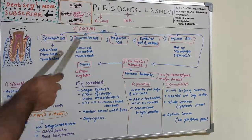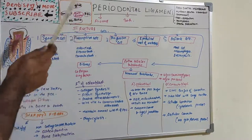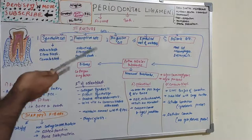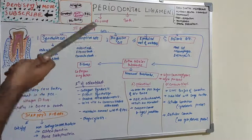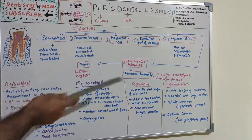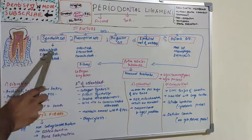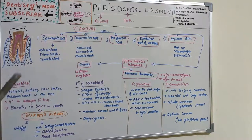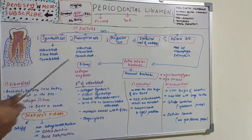Resorptive cells — the destructive cells — are osteoclast, fibroclast, and cementoclast. This is important: 'blast' means create, 'clast' means destruct.